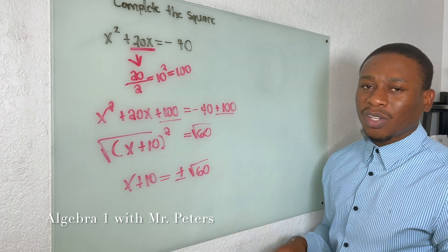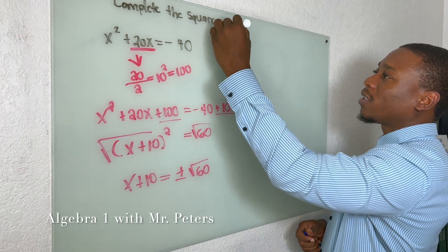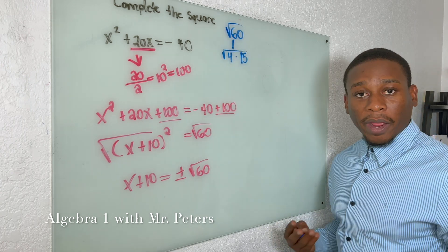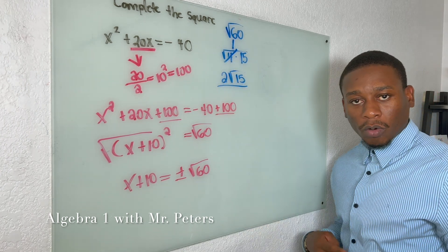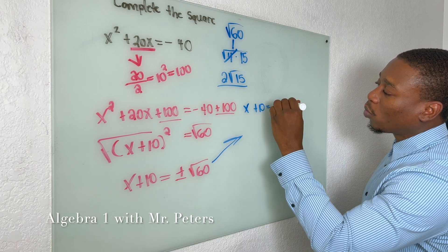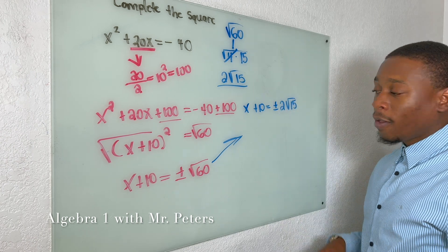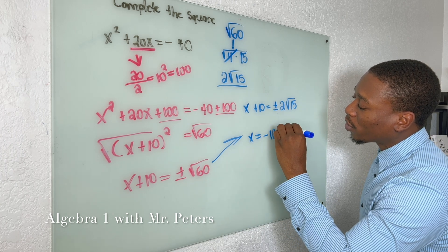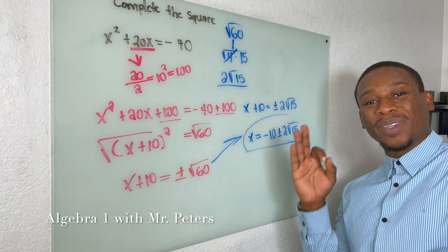Exponent cancels out, we're left with x + 10. And this is equal to, and don't forget your signs, plus or minus radical 60. Now, anytime you have a radical guys, just double check to see if you can simplify. We can break this down into 4 times 15, and we have a perfect square. So 4 turns into 2, 15 stays under the radical. So our final answer is x = -10 ± 2√15. This is how we complete the square.